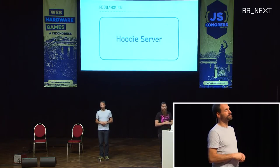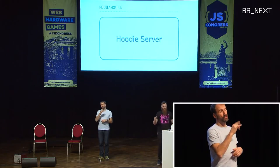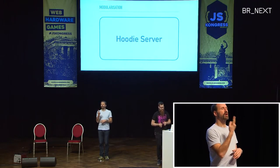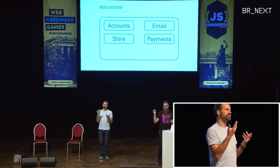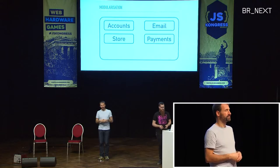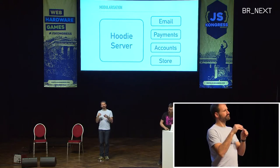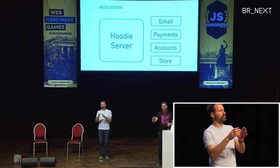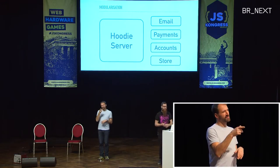When we started out, Hoodie server looked like one big monolith — and when you start out, building a monolith is usually the right thing to do. Then we figured out there are actually a bunch of components in there: an accounts module for sign in and sign up, an email module, some payment gateway interface, and the offline store component. Eventually we moved those to distinct modules. Today most of these are multiple modules in themselves.